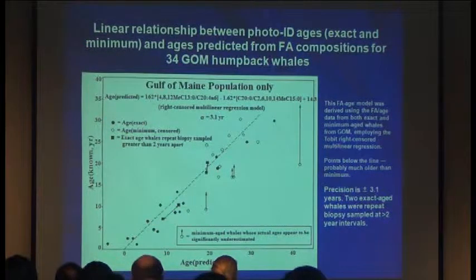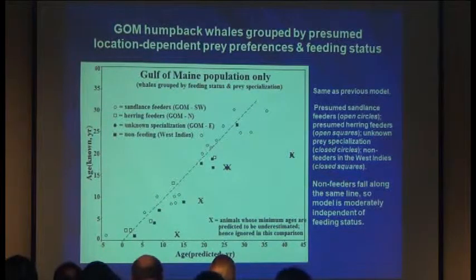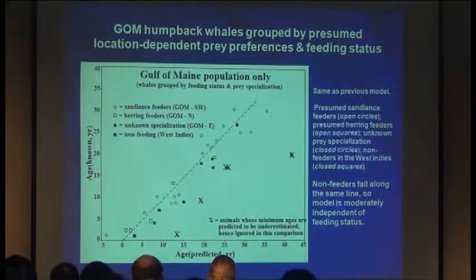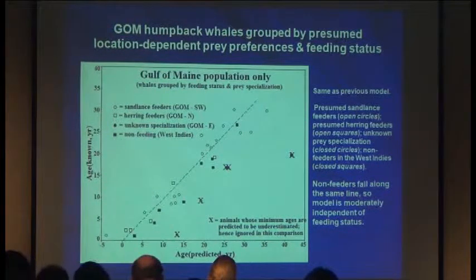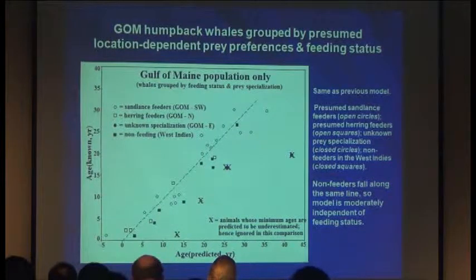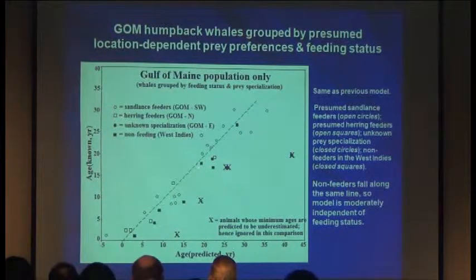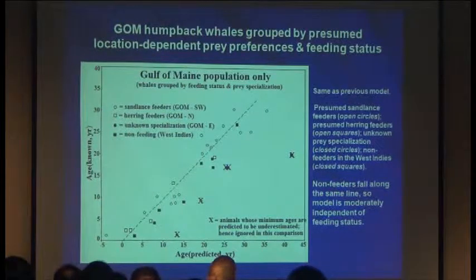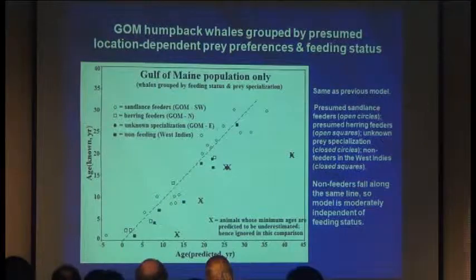Dave separated the data looking at sand lance feeders versus herring feeders versus unknown specialization. The presumed sand lance feeders fit the model quite well. Importantly, even the non-feeding animals that were in the West Indies — the model still held true. So feeding status does not appear to be a problem when it comes to using these fatty acid ratios to help predict age.